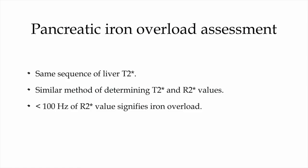The pancreas is very susceptible to iron deposition in these patients. The same T2 star sequence used for the liver can be applied here as well. An R2 star value greater than 100 Hz signifies iron overload in the pancreas.